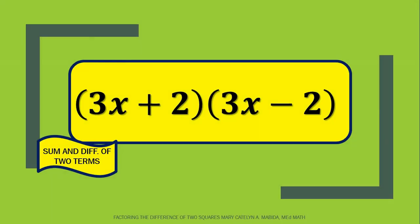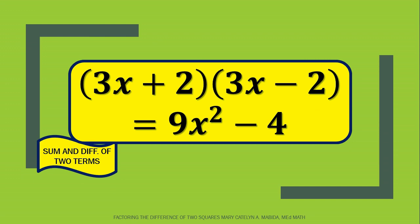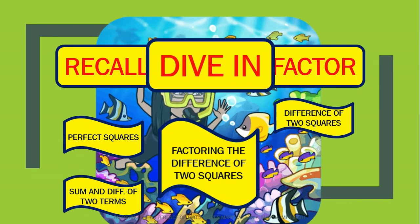Now want another example? Here's another one. The quantity of 3x plus 2 times the quantity of 3x minus 2. And the product is? 9x squared minus 4. I know you can do it. Now let's dive in.